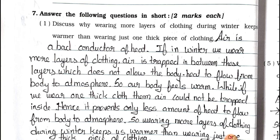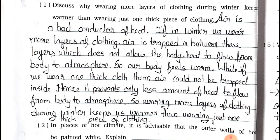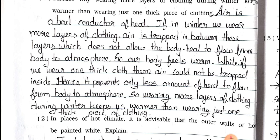Answer: Air is a bad conductor of heat. If in winter we wear more layers of clothing, air is trapped in between these layers which does not allow the body heat to flow from body to atmosphere, so our body feels warm. While if we wear one thick cloth, air cannot be trapped inside, hence it prevents only less amount of heat from flowing. So wearing more layers of clothing during winter keeps us warmer than wearing just one thick piece of clothing.